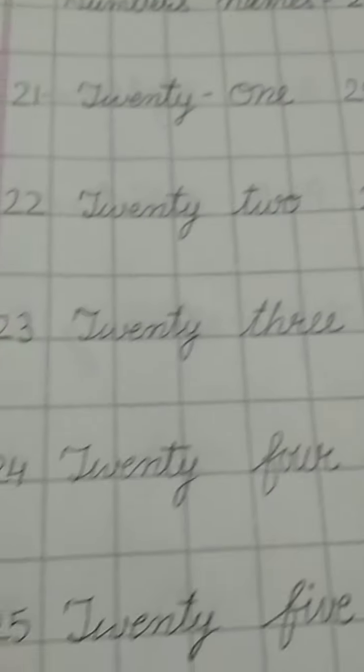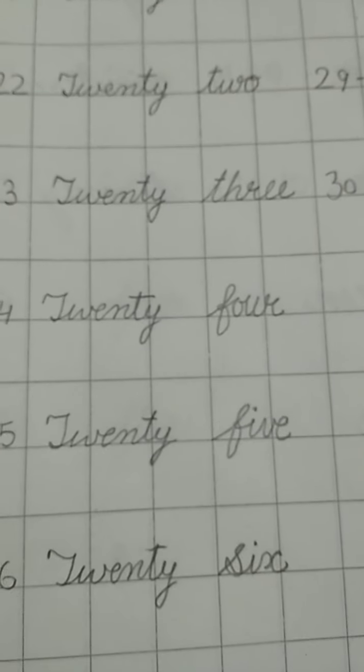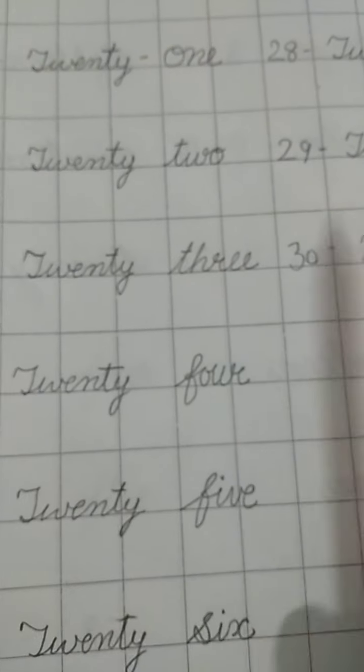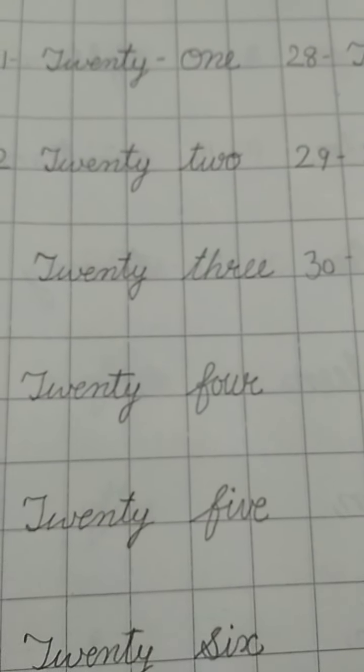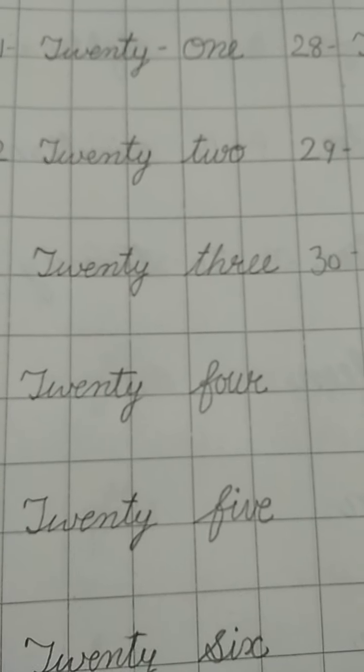This is twenty-one to thirty number names. Okay, kids, this is your classwork. Then next page you write to do your homework. Twenty-one to thirty number names. Okay, understand? Thank you.